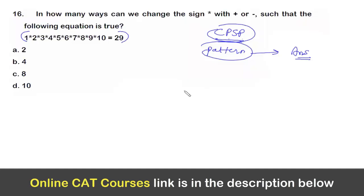Now here it says, in how many ways can we change the star mark with either plus or minus such that the following equation is true? Now this equation equals 29. I always say that whenever you come across any questions wherein you get some numbers and by changing the plus or minus sign, what you have to think is the boundary condition.